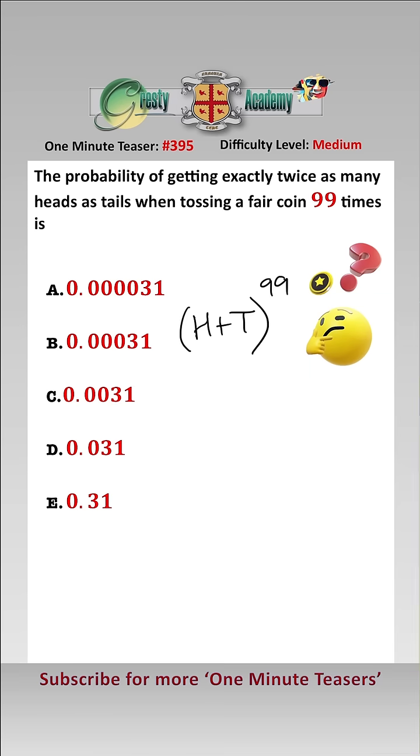And what we want is the probability that there are 66 heads and 33 tails, i.e. twice as many heads as tails.